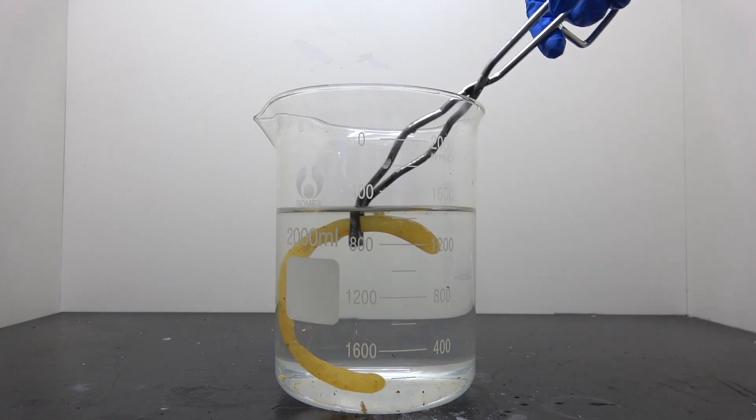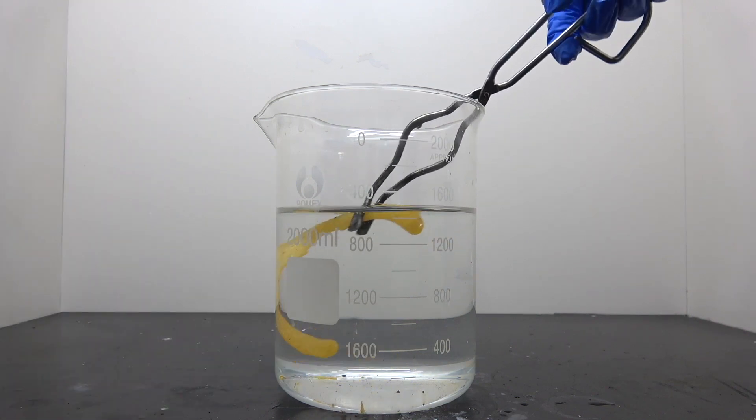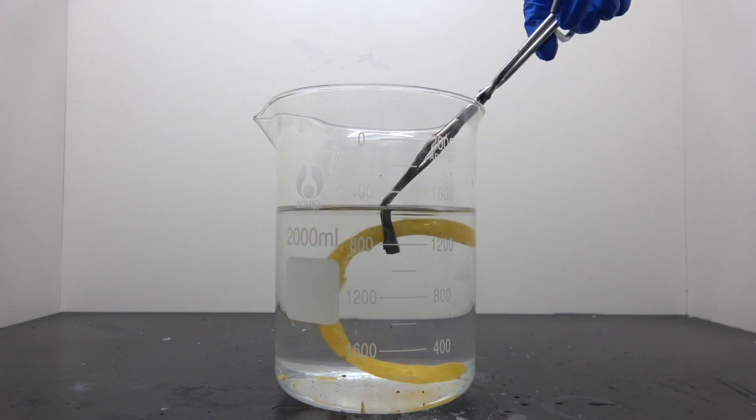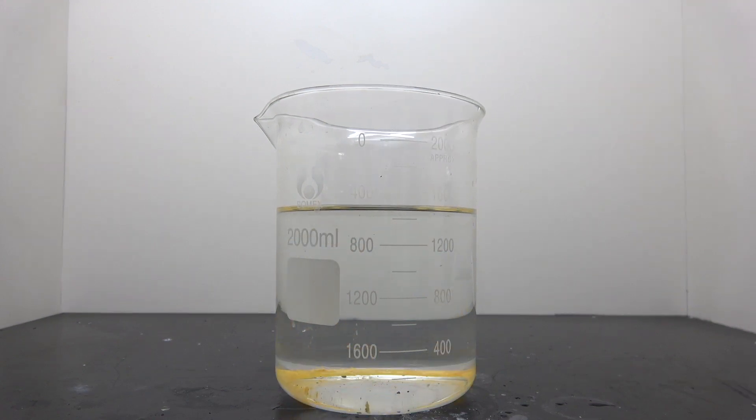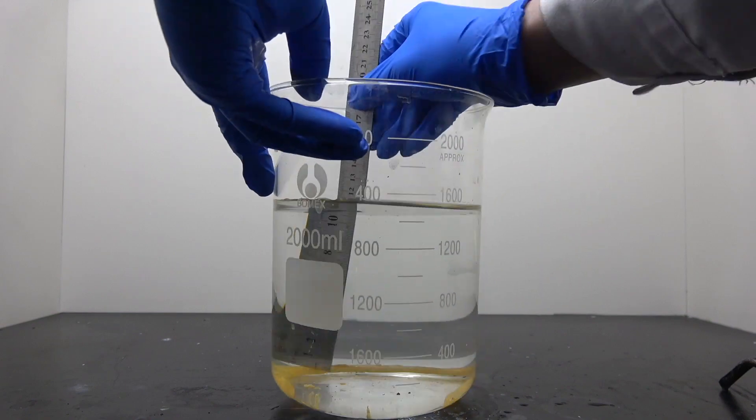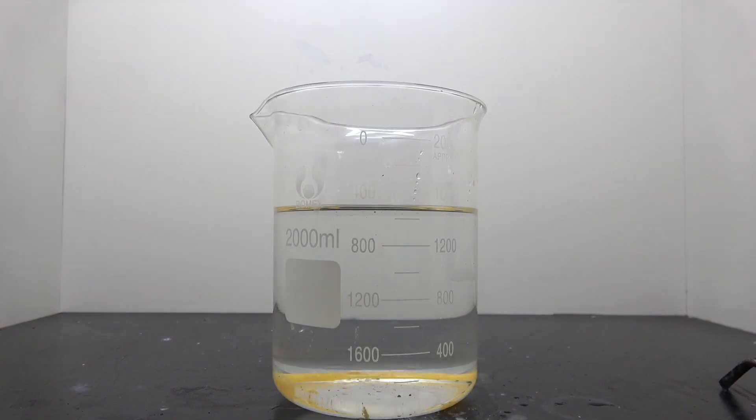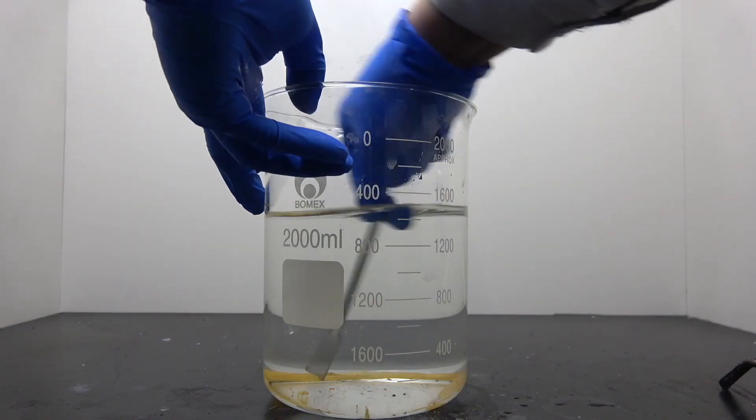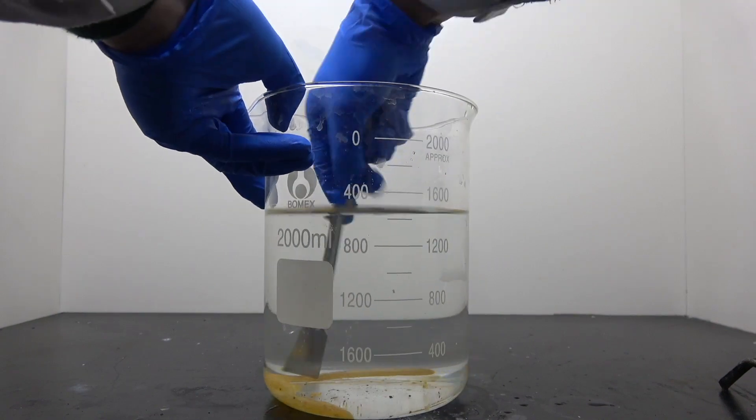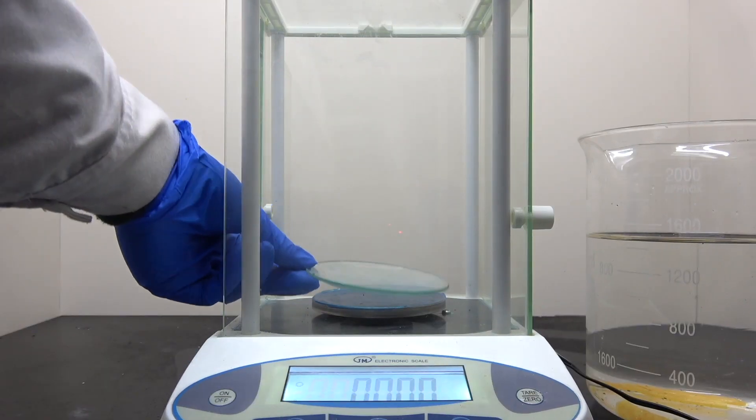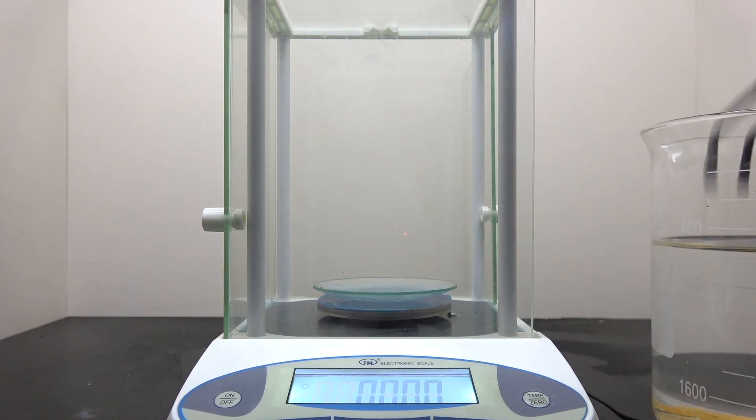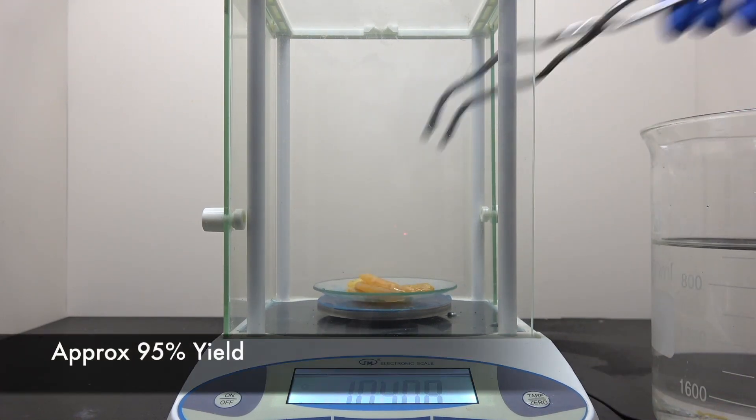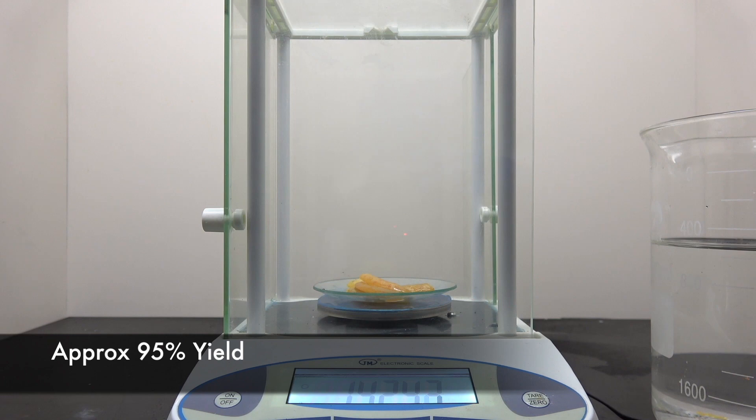Unfortunately, it didn't quite fit into the bottle that I intended to store it in. So I had to break it up with a spatula. What I found interesting was, despite its waxy-looking appearance, it was actually pretty crispy. And honestly, I was shocked to see how good the result was. It produced over 14.2 grams of product, which represents an astonishing 95% yield.